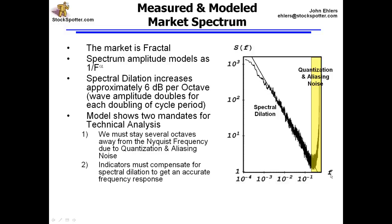On this chart, the horizontal scale is logarithmic in frequency: 10 to the minus 1 is a 10-bar cycle, 10 to the minus 2 is a 100-bar cycle, 10 to the minus 3 is a 1000-bar cycle. The amplitude scale is also logarithmic in power. What we see is that market cycles get larger and larger as the periodicity gets longer and longer, growing in exactly the same proportion — roughly 6 dB per octave. That is, every time you double the cycle period, you double the wave amplitude.